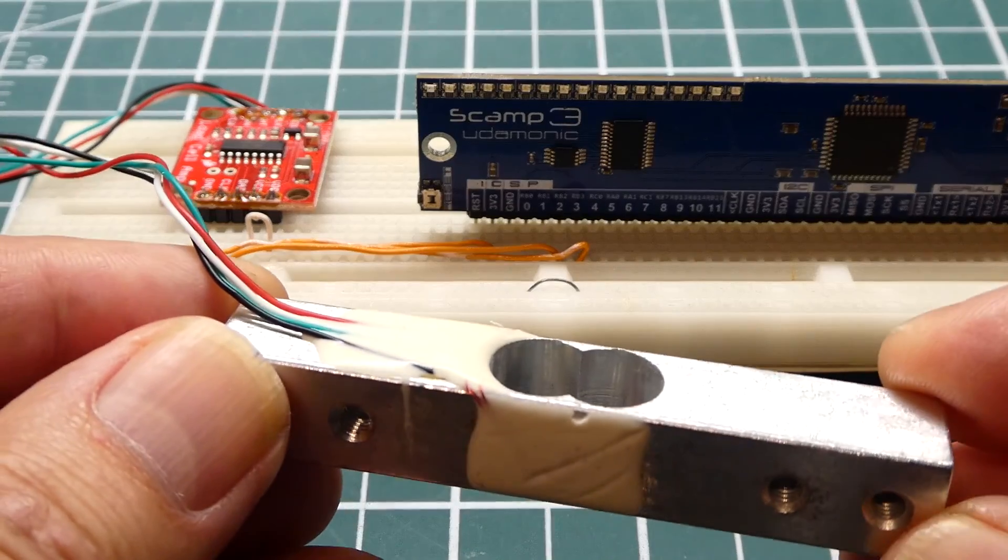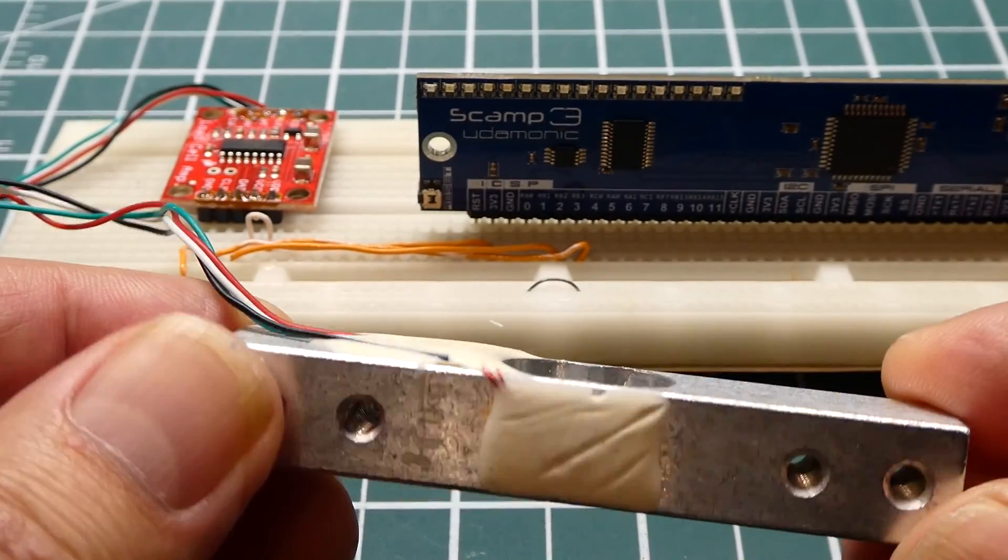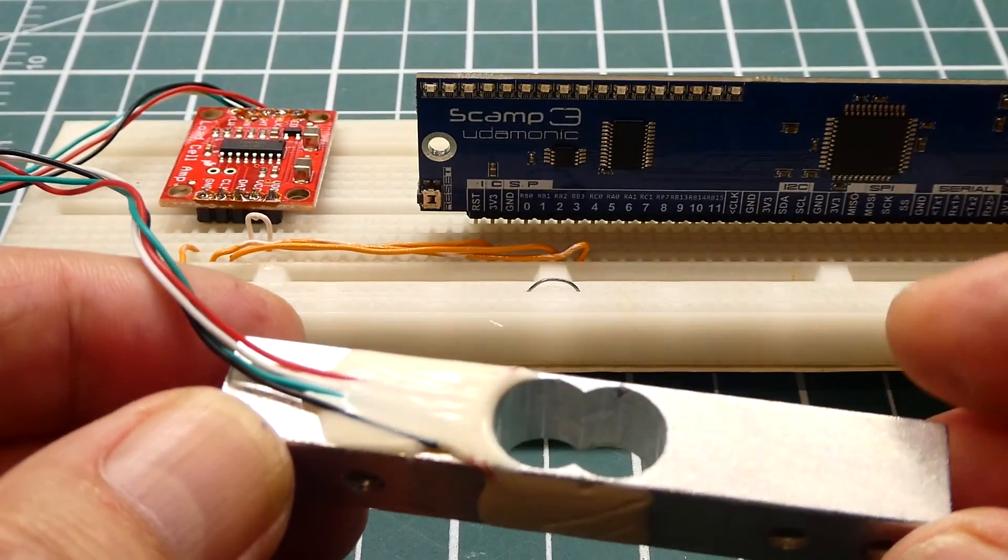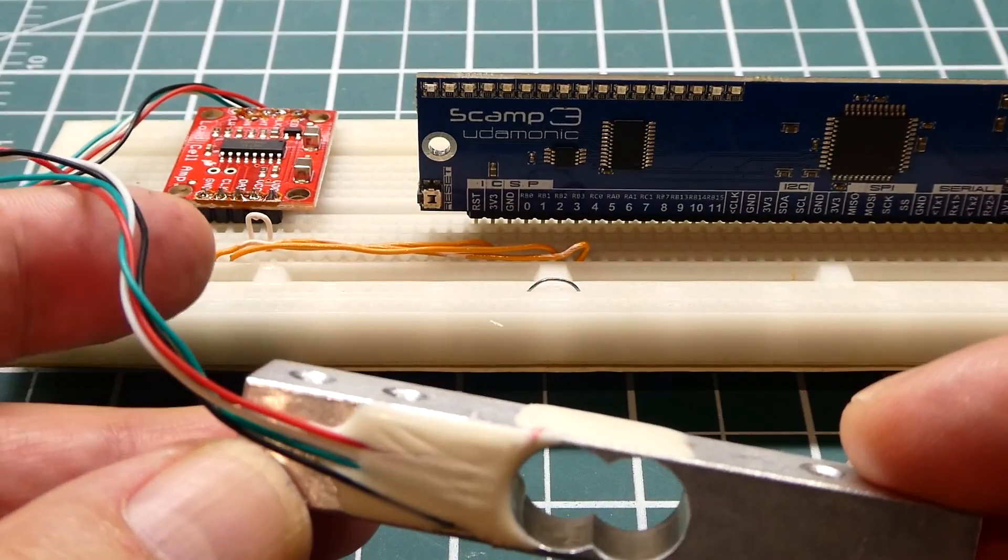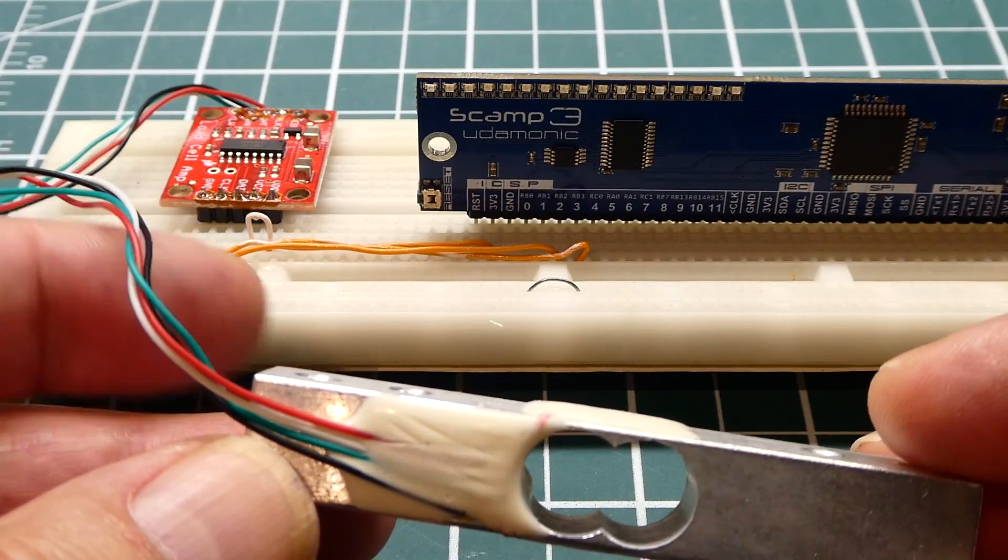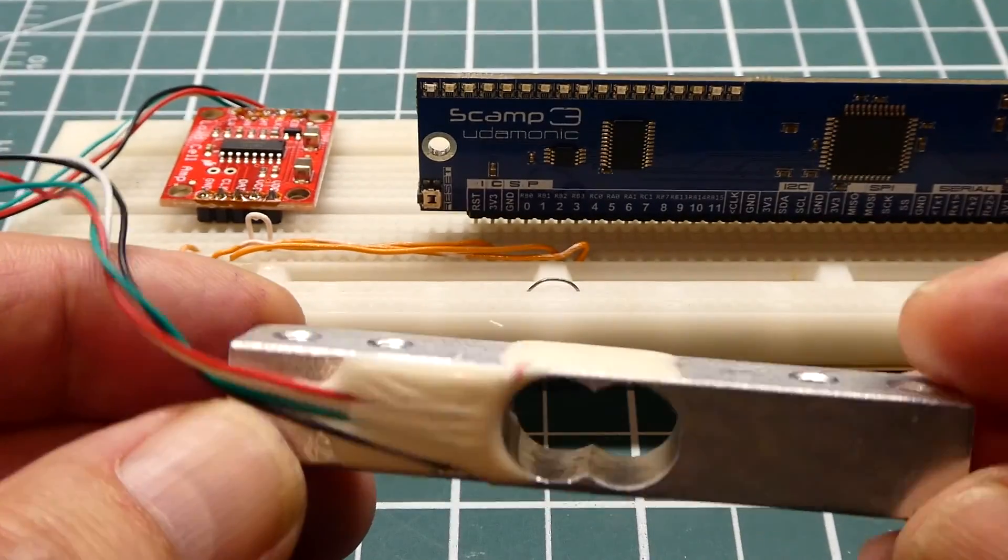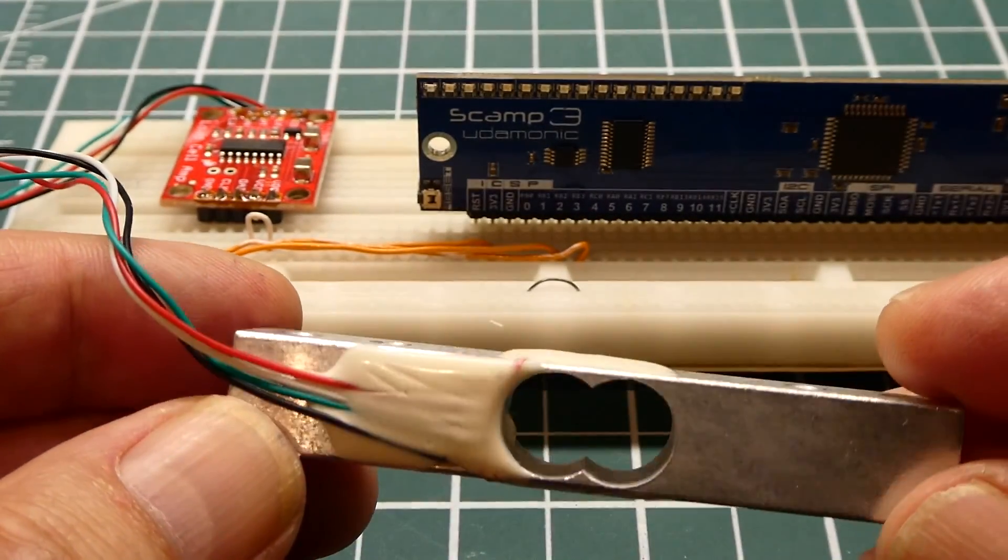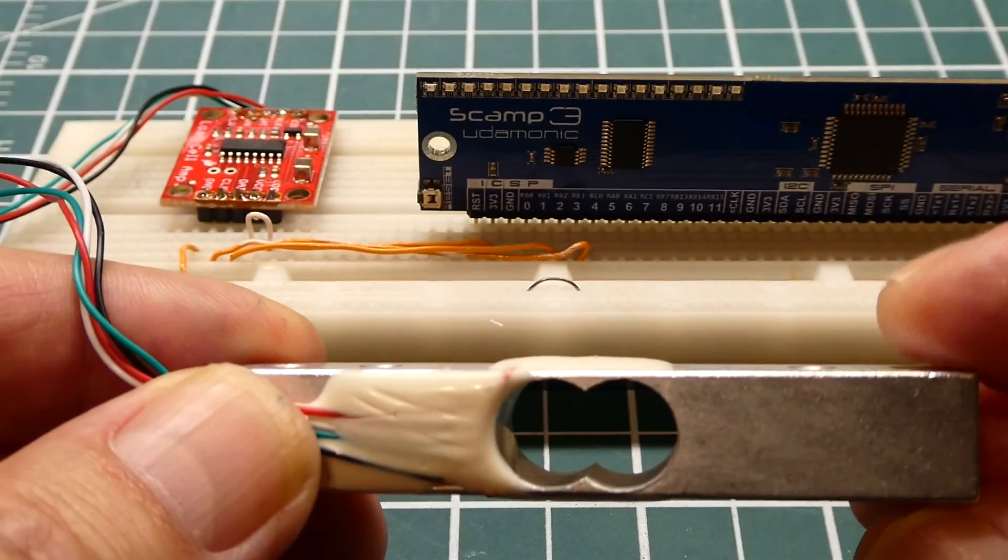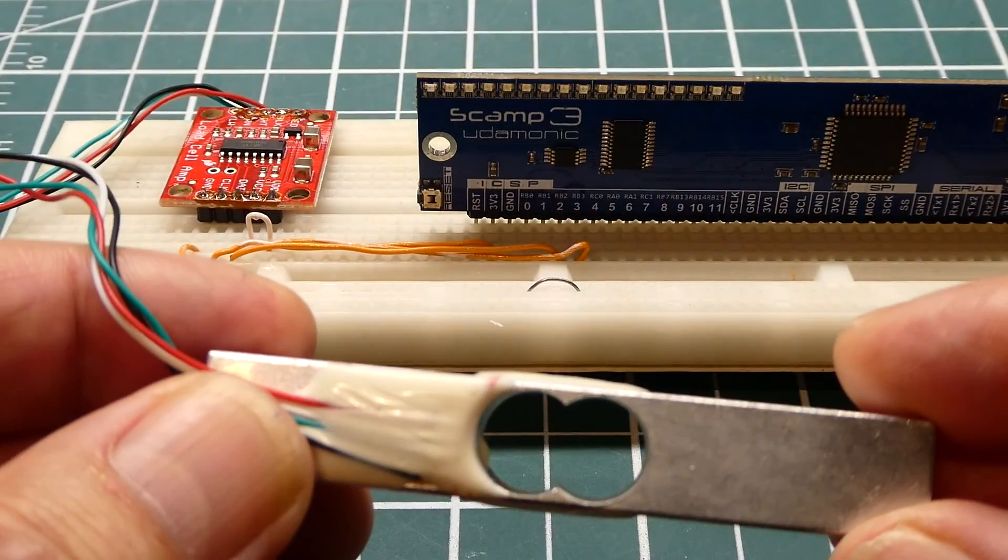Okay, so that was my little tutorial on how to interface a load cell to a microcontroller. You could take a load cell, hook it up into the HX711 amplifier, feed it into your favorite microcontroller and then calibrate it with some calibration weights. Now you could have a way to measure weight for your robotic projects.